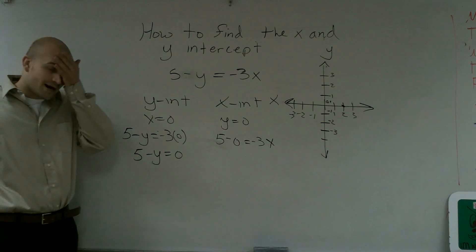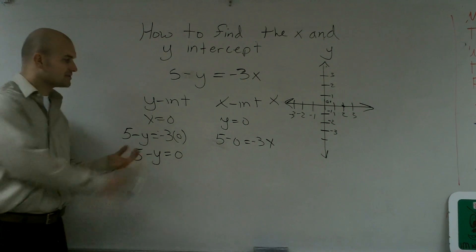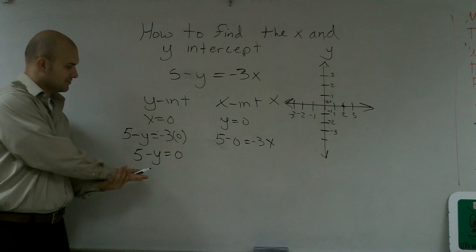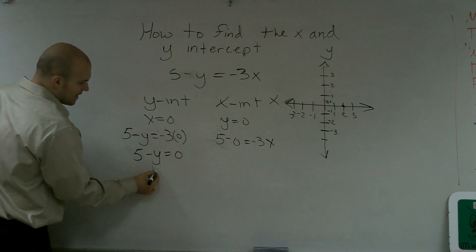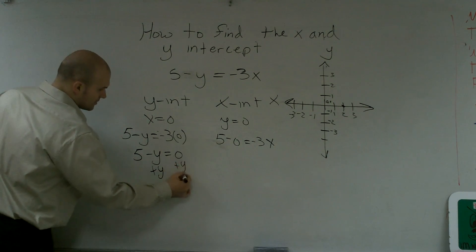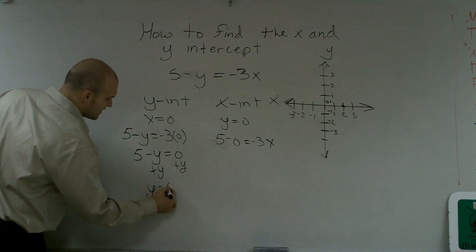So you guys got to think, well, how am I going to get my y by itself? Remember, when we're solving for variables, we want to get the y value positive and by itself. Well, I can simply just add the y to both sides. And I get y equals five.